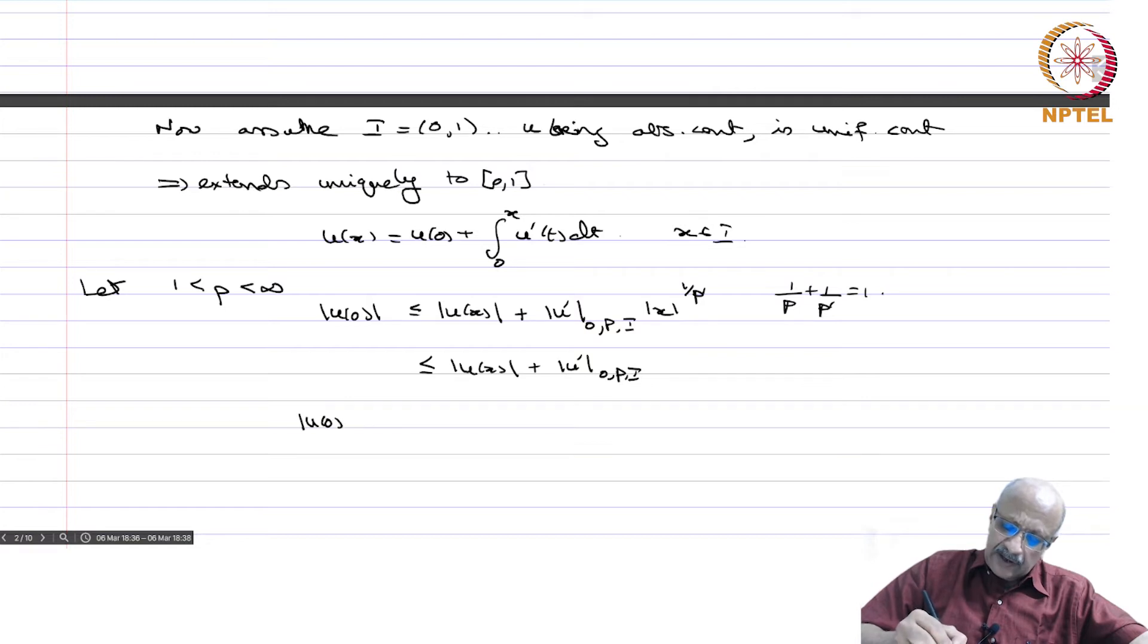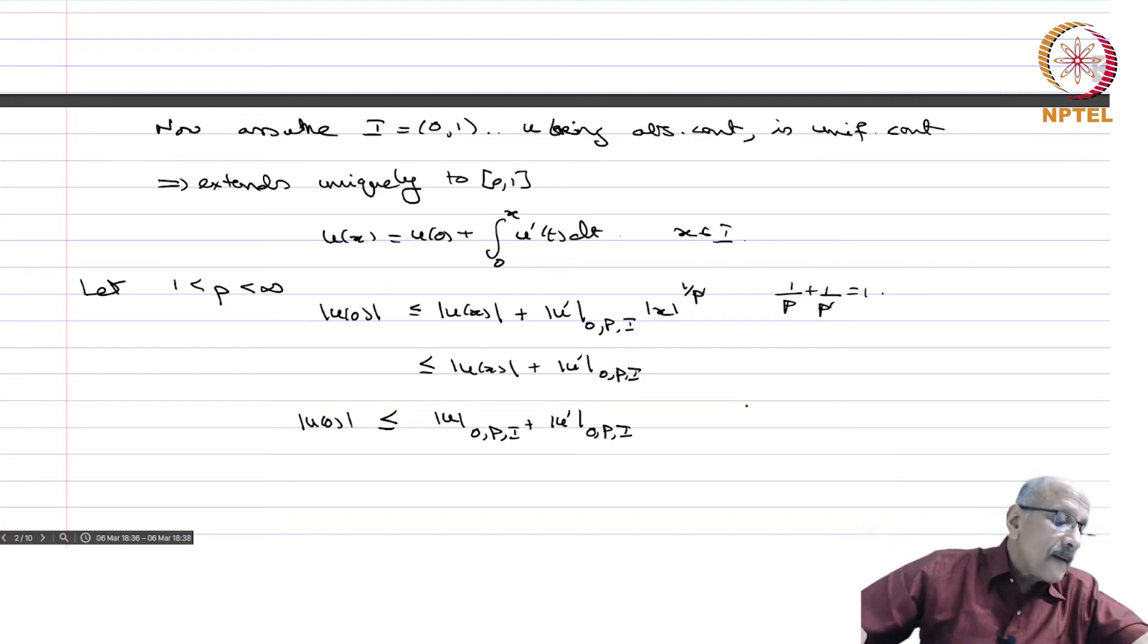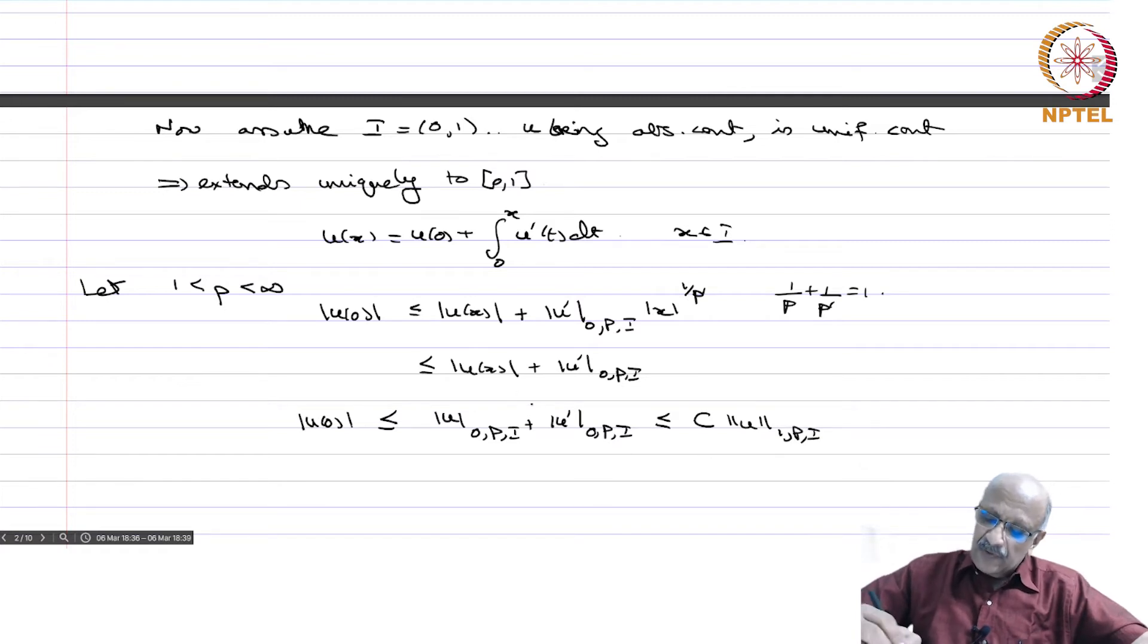This is Holder's inequality. Applying the triangle inequality to the two functions, we get this is less than |u(x)| plus |u'|_{L^p(I)} because |x| is less than 1. Now we apply the triangle inequality again, and by the L^p norm properties, you get |u(0)|_{L^p(I)} plus |u'|_{L^p(I)}, and that is less than or equal to some constant times ||u||_{W^{1,p}(I)}, which is defined in terms of the p-th powers but the sum of the norms is an equivalent norm. So c depends only on p.